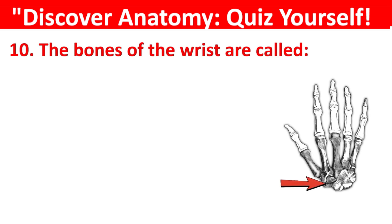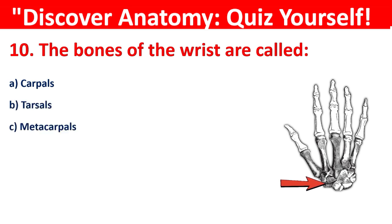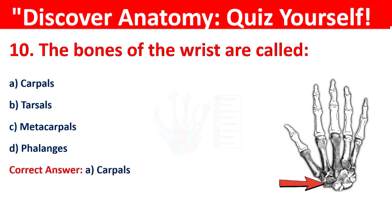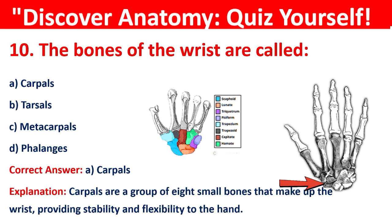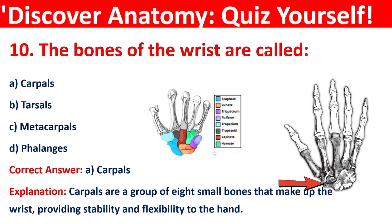Question 10: The bones of the wrist are called? Options are: Carpals, Metacarpals, or Phalanges. The correct answer is A, that is Carpals. The Carpals are a group of 8 small bones that make up the wrist, providing stability and flexibility to the hand.